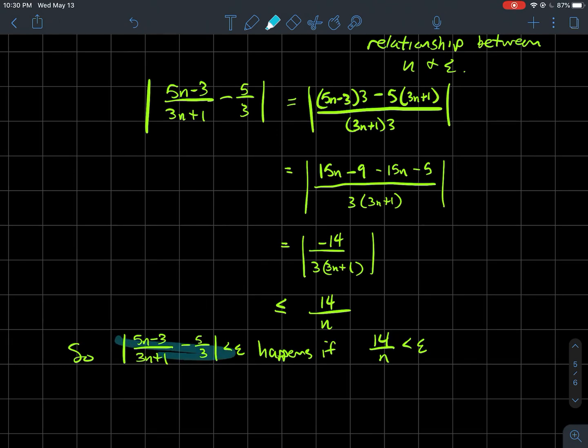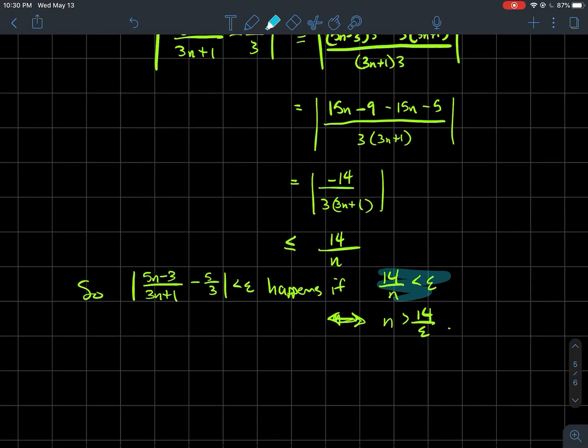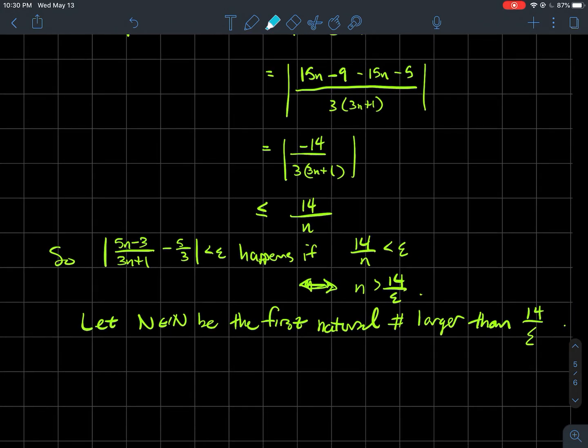That's much easier than the original expression. If I specify that 14/n < epsilon, that gives me an idea of how big n should be: n should be bigger than 14/epsilon.